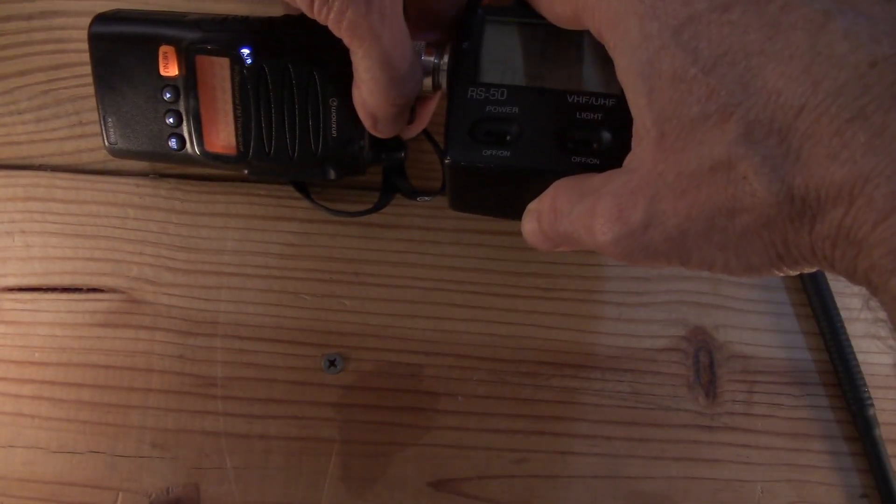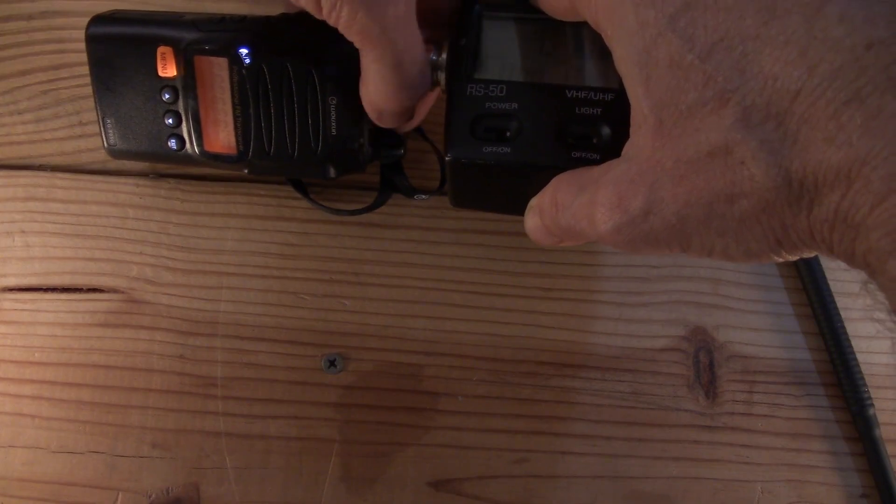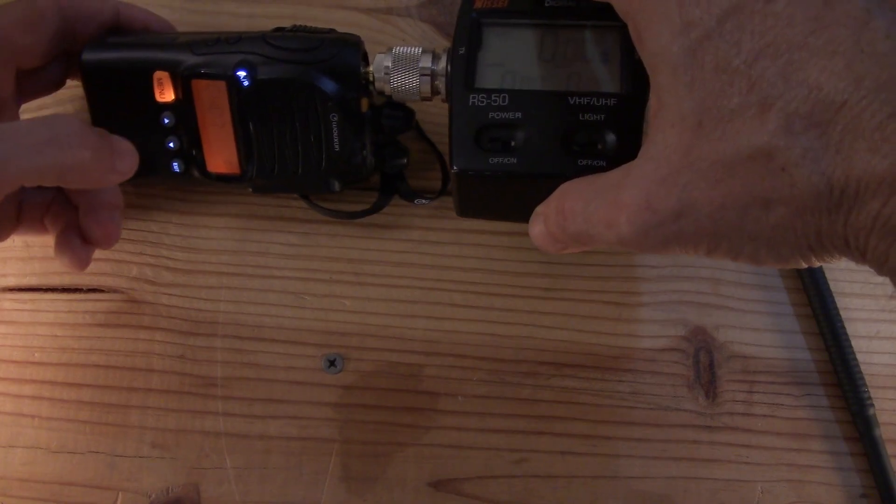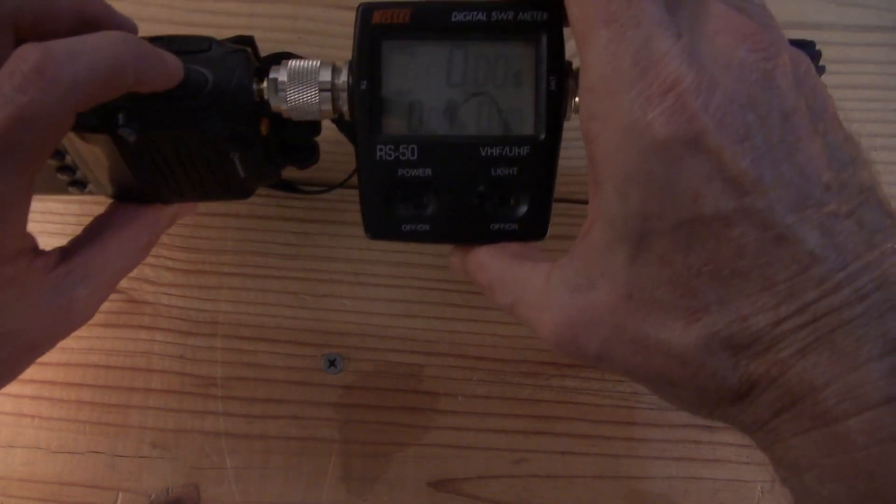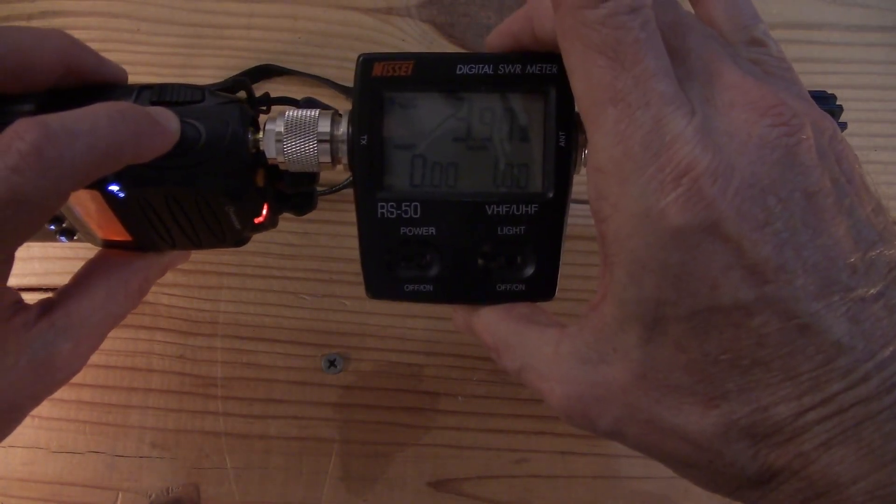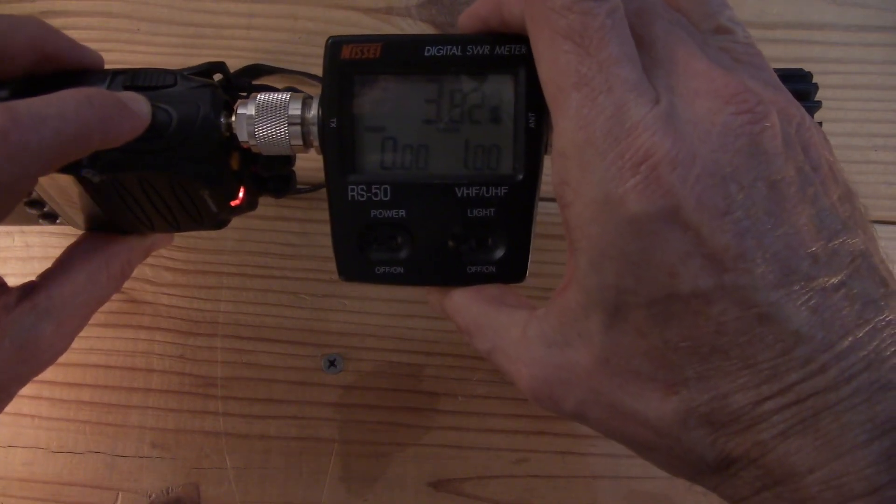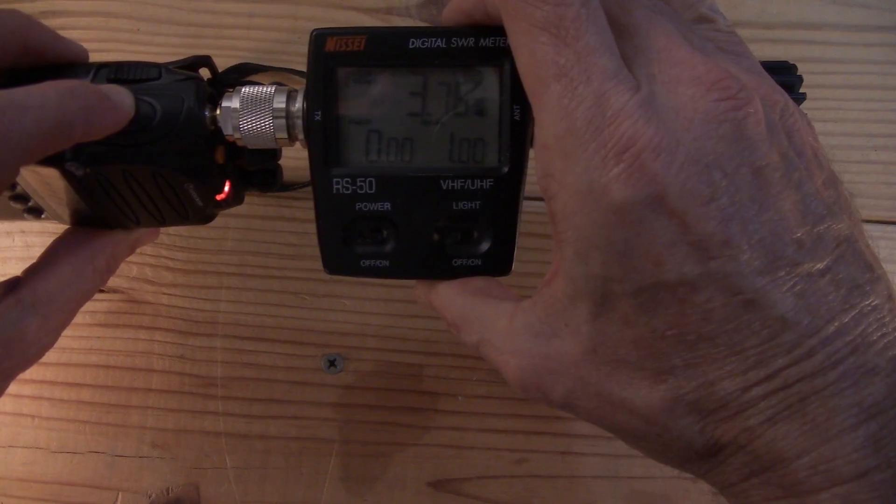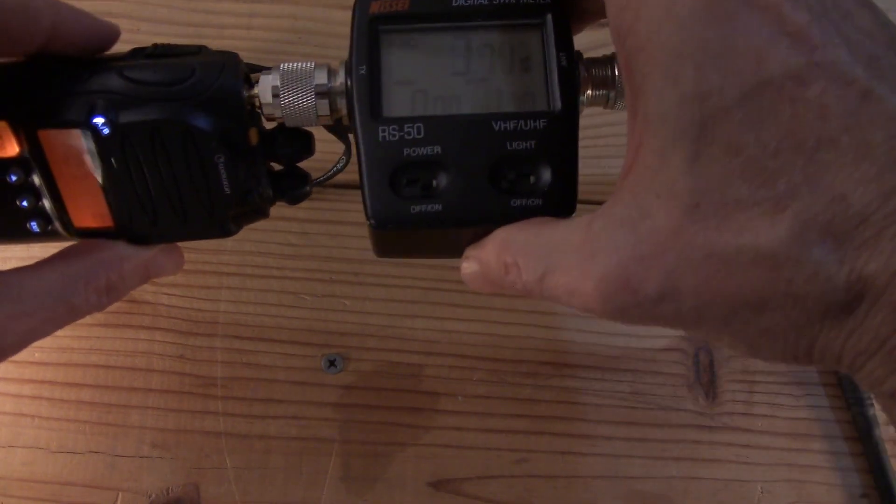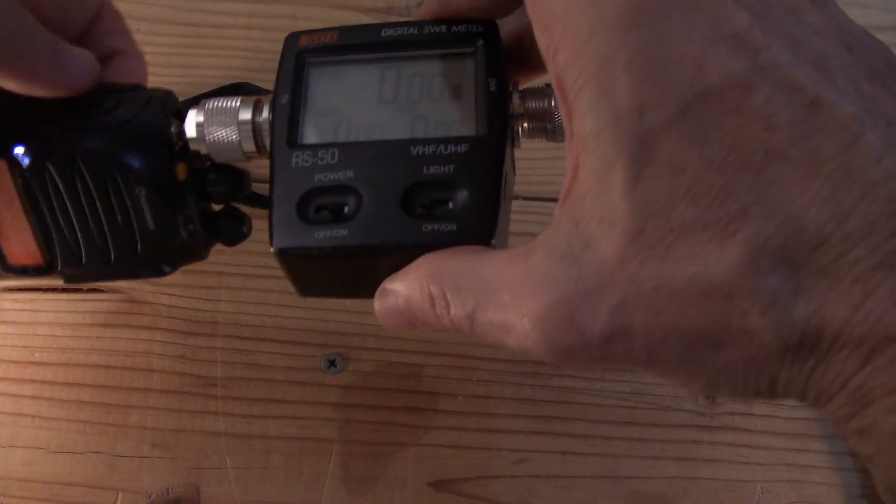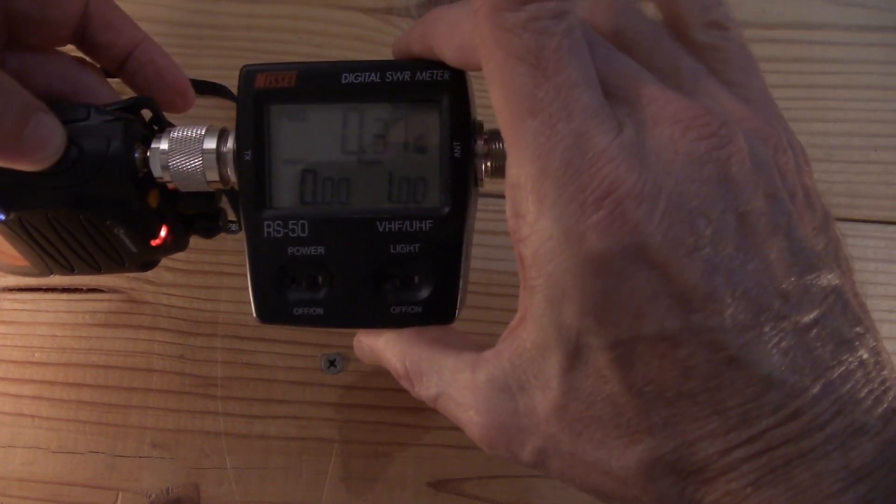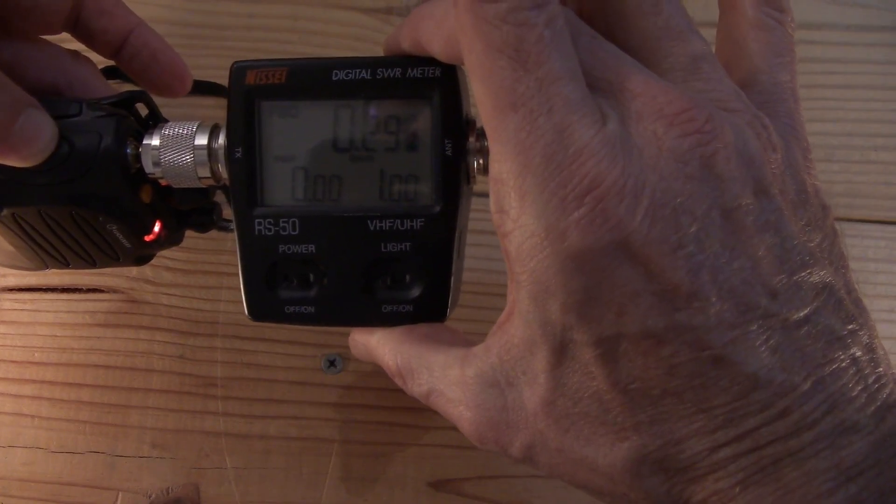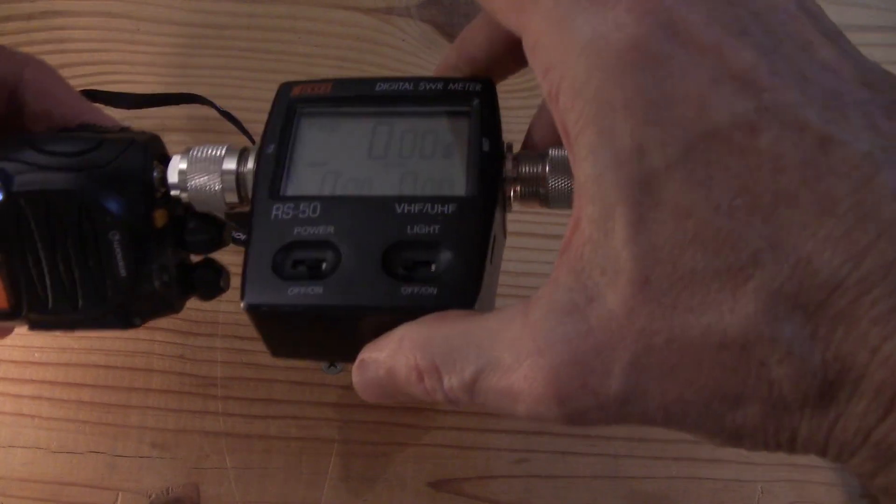Going down to 7 here and we get 3.8, 3.79. Let's say three and a quarter. Go up to 8, and we're getting 0.29, 0.28.